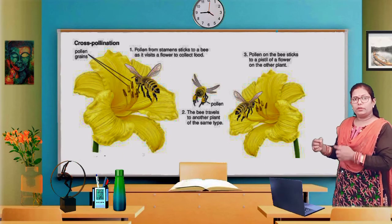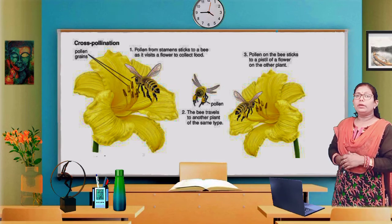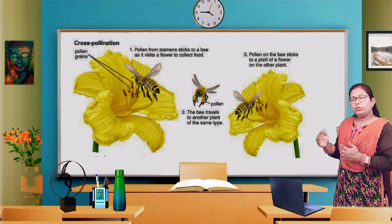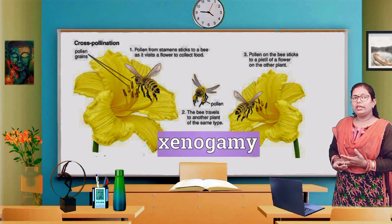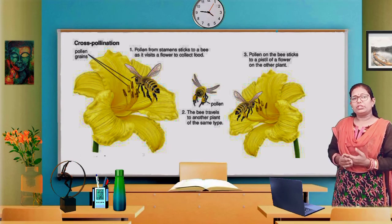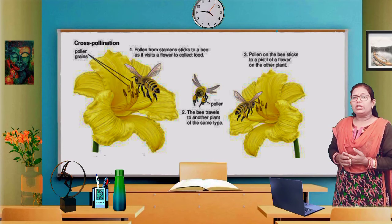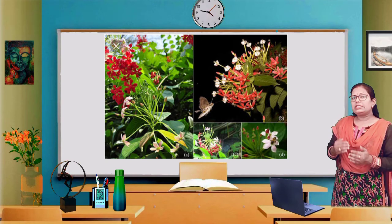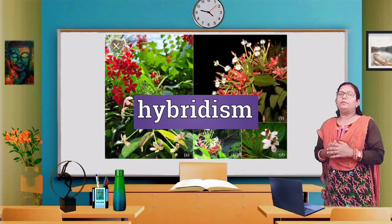Now we will discuss about cross-pollination. Geitonogamy can be defined as cross-pollination between the flowers of the same species. But sometimes cross-pollination occurs between the flowers of two different species. This condition is known as hybridism.